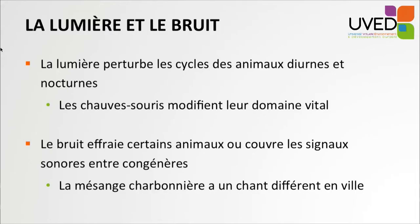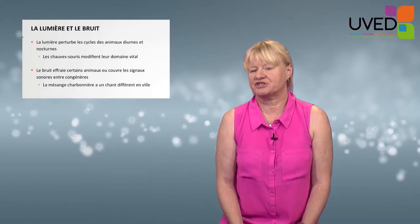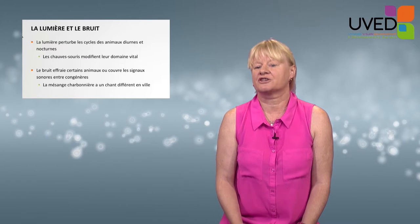Light and noise also disturb some species and may act on their vital domain. Light disrupts the cycle of diurnal and nocturnal animals — bats are disturbed by light, though some come to hunt under street lamps for insects, while others stay away from lighted areas. Noise frightens off many animals and covers the sound signals of many species.